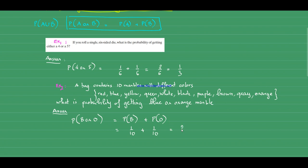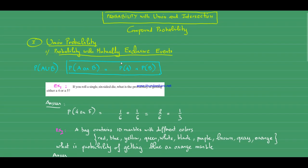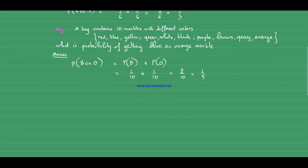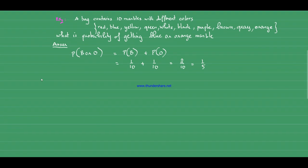So the probability of blue or orange equals probability of getting the blue marble plus probability of getting the orange marble. You have only one blue so 1/10, and one orange so 1/10, giving you 2/10 which is 1/5.